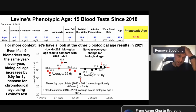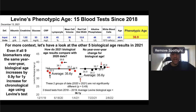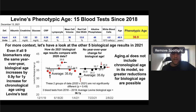Note that even if all nine biomarkers stay the same year over year, biological age using this tool will increase by 0.9 years for every one-year increase in chronological age. So if I'm 80 with the biochemistry of a 20-year-old, am I up to 20 years younger than my chronological age, or even younger than that? To account for that, I like to include other biological age tools such as aging.ai, which doesn't include chronological age in its model, so greater reductions in biological age are possible.